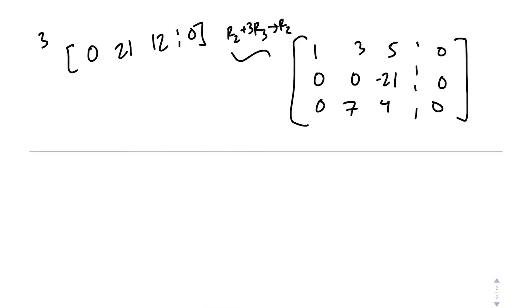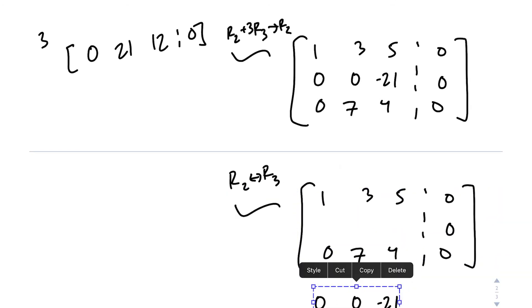So this is almost in echelon form, but we still have to do just like one little switcheroo. We're going to switch row 2 with row 3. I'm honestly just going to copy and paste this. Once you do enough of these problems, you just get tired of writing the matrix all over. So we're just going to do a little swap.